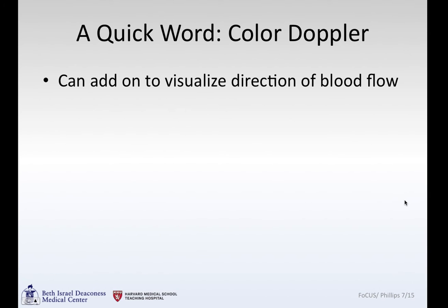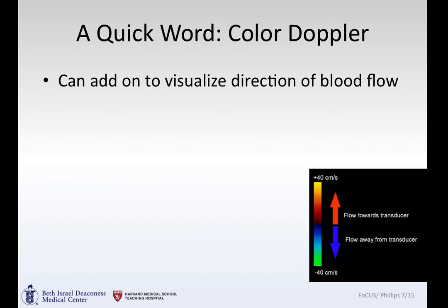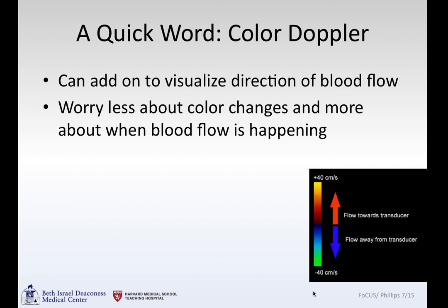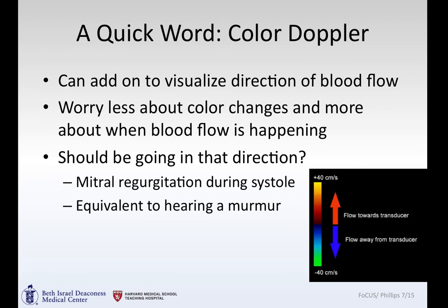A quick word about color Doppler as well. You can add this on to visualize direction of blood flow — red means it's coming towards you, blue means it's going away. But aliasing can happen and the coloring can change. What's more important is about when in the cardiac cycle the blood flow is happening, and that will give you a sense of whether there's regurgitation or not.